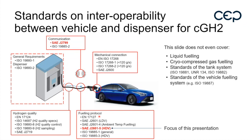When you look into EN 17127, you won't find a specific protocol, but it tells you that you need to follow a standard published by an official SDO — a standardization organization — which basically means you follow SAE, ISO, or the Japanese standard JREG. We all know the J2601 for light duty vehicles here.